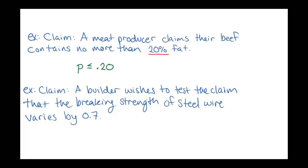My third example is that a builder wishes to test the claim that the breaking strength of steel wire varies by 0.7. This is a statement about the standard deviation. The steel wire would be rated at a certain breaking strength, and this looks at how far away from that rating we would expect the wire to actually be. So in symbolic terms, this would be sigma equals 0.7. All of these claims are either an equation or an inequality involving some kind of population parameter — whether that's a proportion, a mean, or a standard deviation.